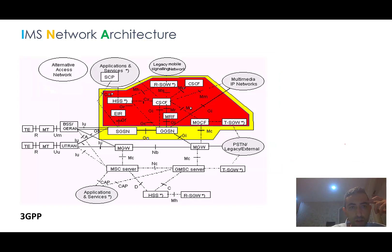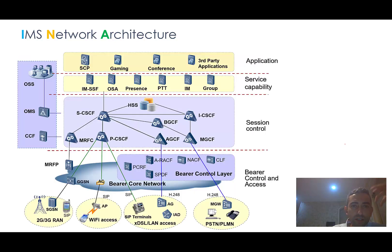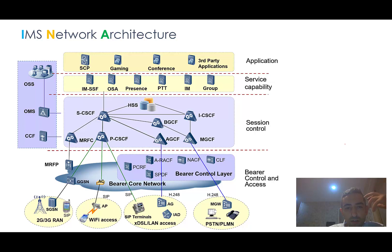This is the 3GPP IMS network architecture and topology. At first look it seems very complicated, but it is not — don't be afraid of the many interfaces and various names; it will become easier after going through the details. A better hierarchical presentation of the IMS network comes from one of the prestigious vendors, and it shows the IMS network much more clearly, with better control and access layers visible.